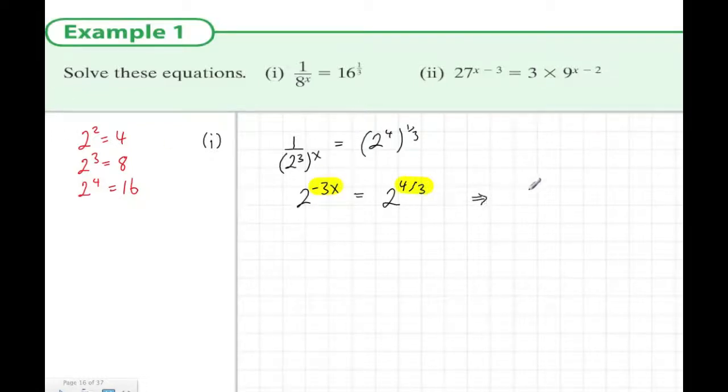And these must be equal, these two powers. So in other words, minus 3x must be equal to 4 over 3. To solve this equation, we divide both sides by minus 3, and this gives me minus 4 over 9 is the answer.